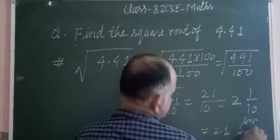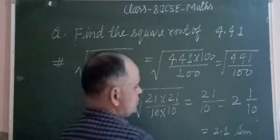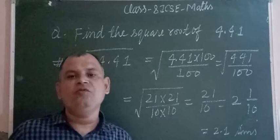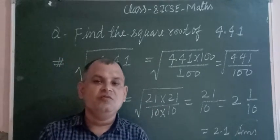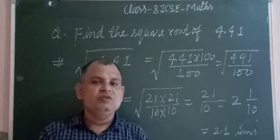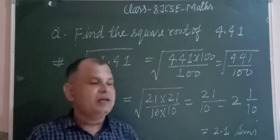2.1 is the answer to this question. The square root of 4.41 is 2.1. In this way we find the square root of 4.41 using the factorization method.